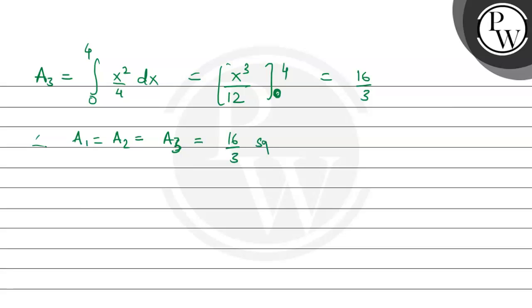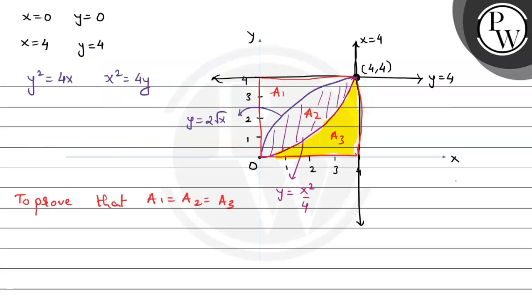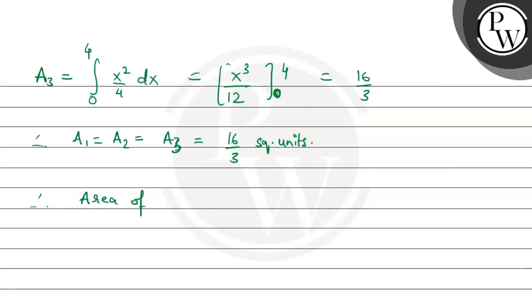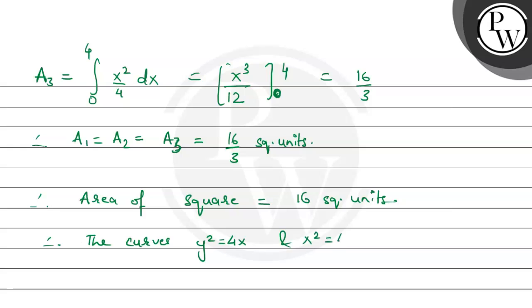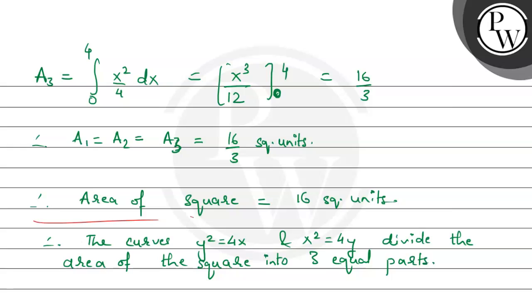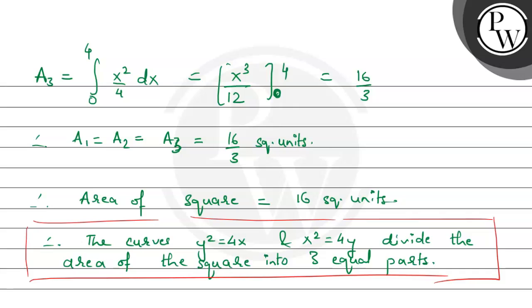All three are equal to 16/3 square units. Let's also calculate the area of the square: 4 times 4 equals 16 square units. We can therefore see that the curves y squared equals 4x and x squared equals 4y divide the area of the square into three equal parts. This is our final answer. I hope you understood it well — best of luck and thank you.